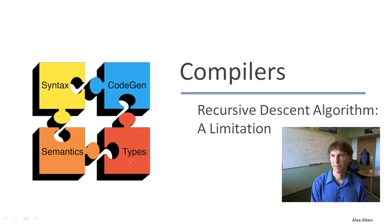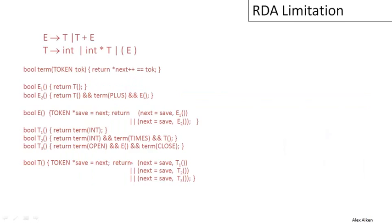In this video, I'm going to cover a limitation of the recursive descent algorithm that I presented last time. Here's the grammar from our last presentation, and here's its implementation again as a set of mutually recursive functions that together implement a simple recursive descent strategy.